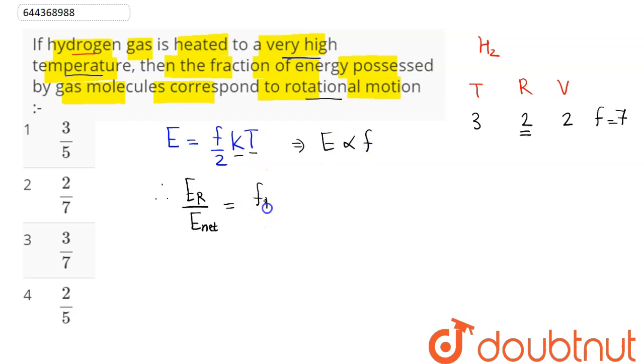So we can say here rotational degrees of freedom divided by net degrees of freedom. So corresponding to rotational degrees of freedom we have 2, and net degrees of freedom we have 7.